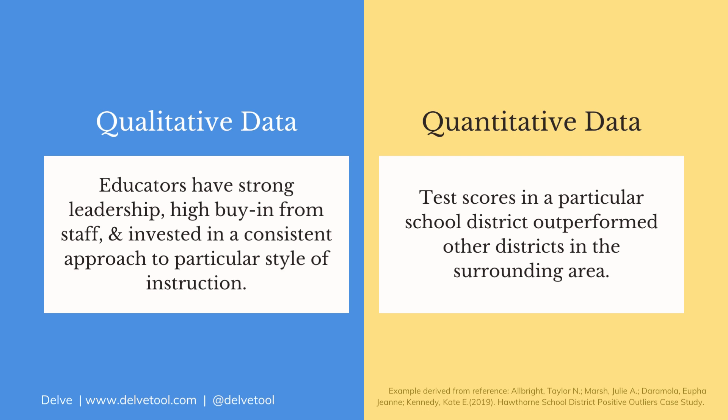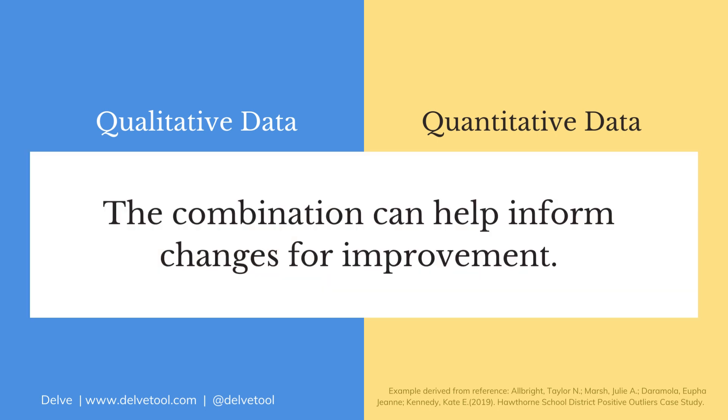Alternatively, qualitative data can tell you that the educators in the high-performing district have strong leadership, have high buy-in among staff members, and have invested in a consistent approach to a particular style of instruction. The combination of quantitative and qualitative data can help inform changes that can improve the performance of the surrounding districts.